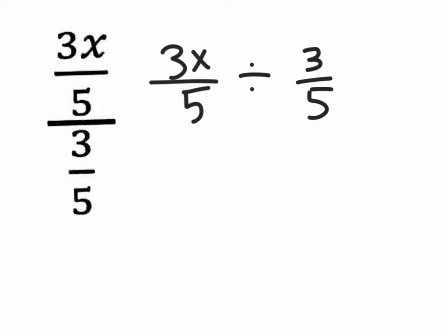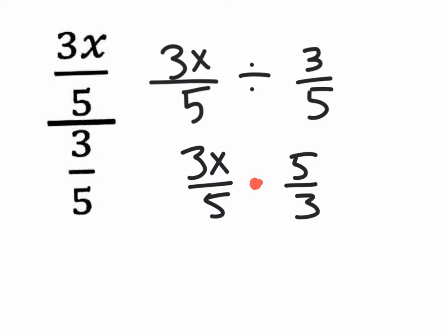This one looks easier to do than the original. Now that we have a fraction divided by a fraction horizontally, we can change this division to multiplication. The first fraction comes down and the second fraction gets flipped. Now there is no addition or subtraction — it's all multiplication. We can just cancel things out, like the 5 on the bottom with the 5 on the top, and also the 3 up here with the 3 down there. And your answer is x. That's it — it's easy.